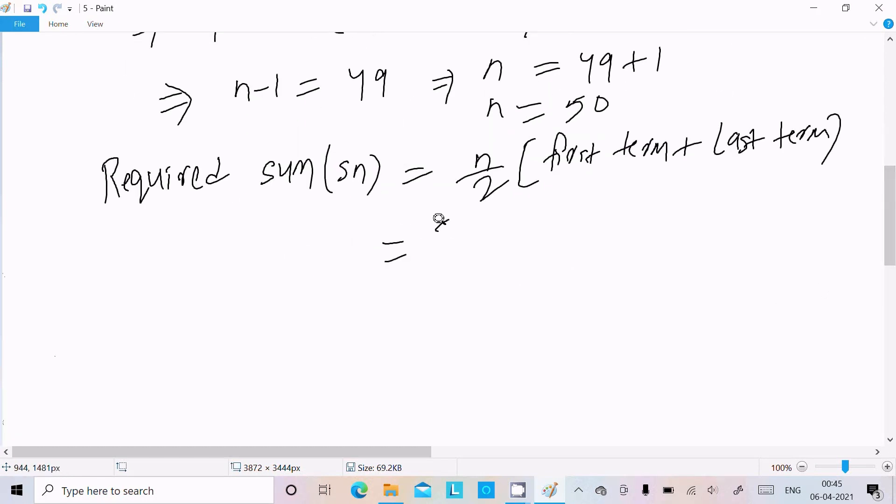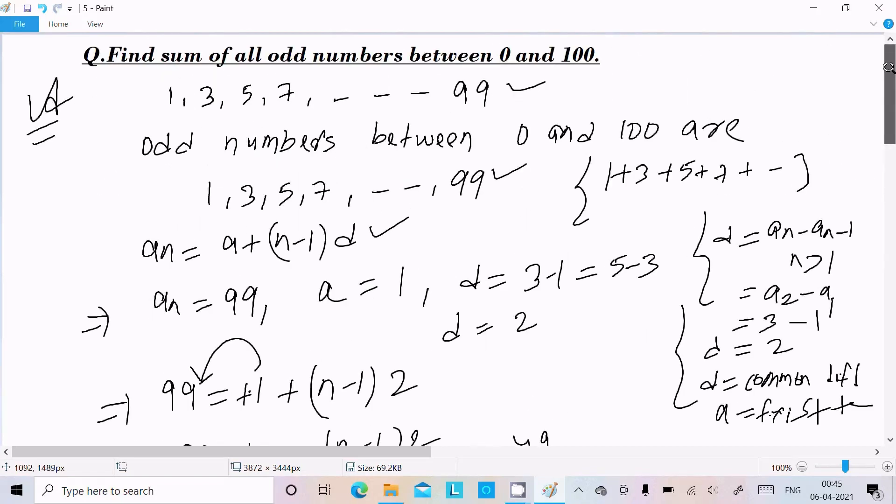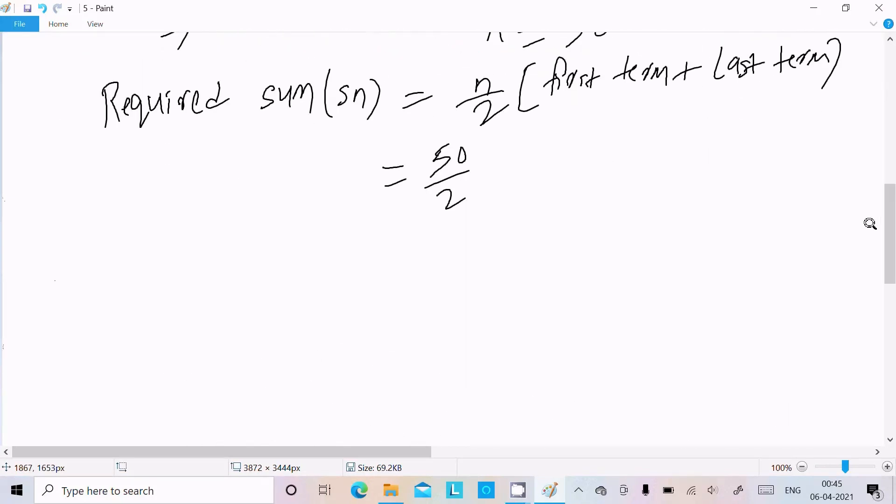So we have (50/2) × (1 + 99). 50 divided by 2 is 25, and 1 + 99 equals 100.